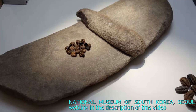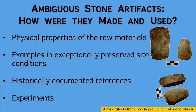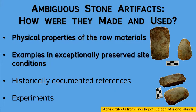A few different approaches can clarify the ambiguities about stone artifacts. Perhaps most fundamentally, you can consider the raw materials and their physical properties. Next, you could look for parallels in reference examples of artifacts, possibly preserved in archaeological sites or documented in known historical contexts. Another approach involves experiments with replica artifacts or computer simulation.